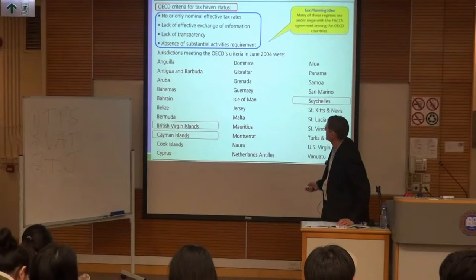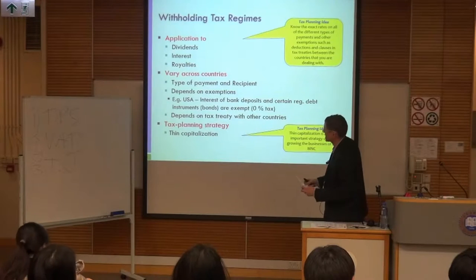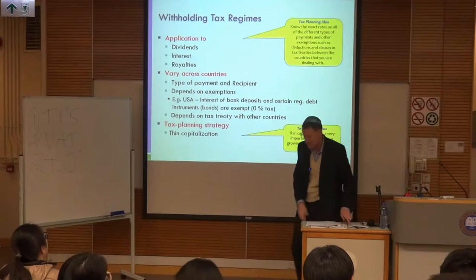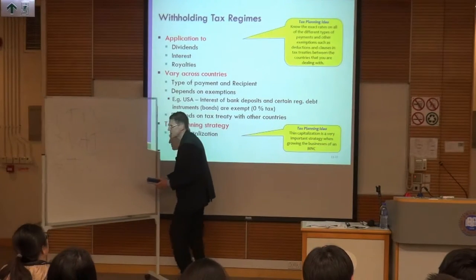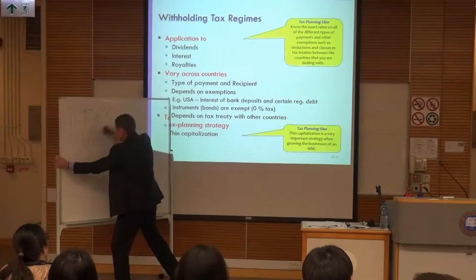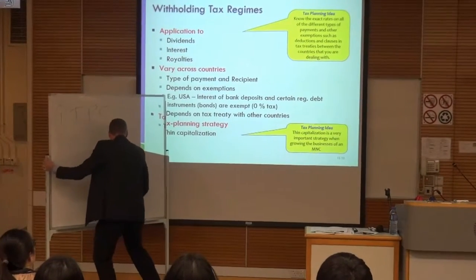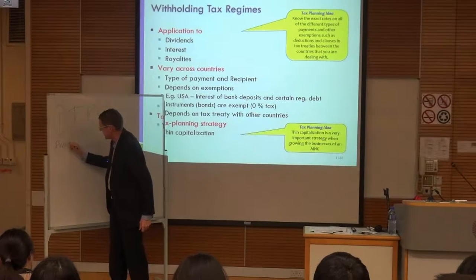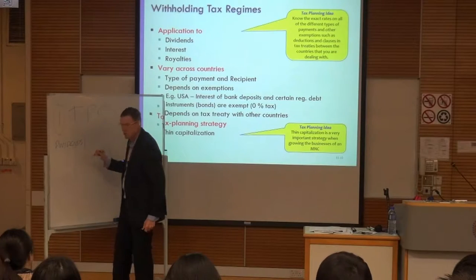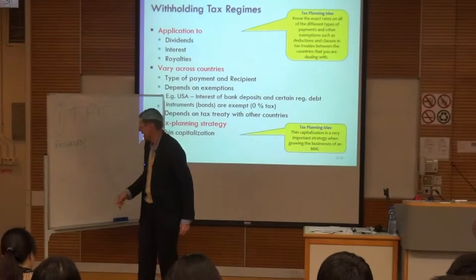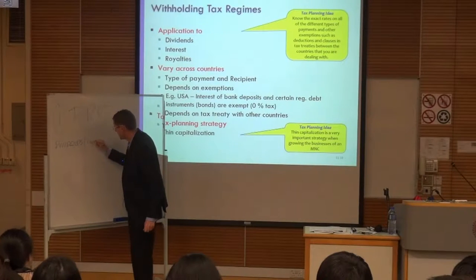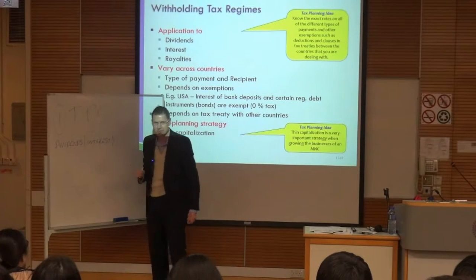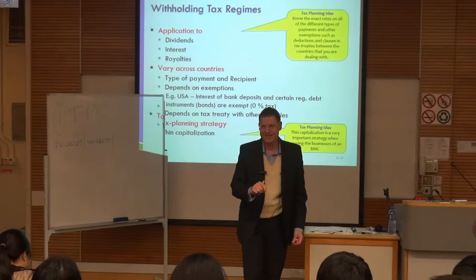We want to get to some examples. The next one is withholding tax regimes. I want to talk about dividends, interest, and royalties, and basically here is how you do your tax planning. We're still on tax planning here. How do you do tax planning? Well, you want to play with dividends, but as you'll see in a minute, dividends don't give you total flexibility. You can also work with interest — a very good idea — that means you can set the interest on a loan from one company to another.